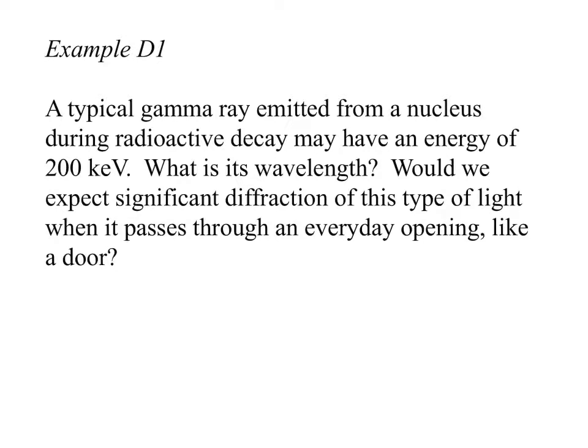Okay. So let's do one example. All right. So we have a typical gamma ray emitted from a nucleus during radioactive decay and we'll have an energy of 200 kilo electron volts. Okay. So of course that's 200,000 electron volts. And we want to know what the wavelength is. And then we want to know would we expect significant diffraction of this type of light when it passes through an everyday opening like a door, which we'll get onto in a minute, but let's start with the wavelength.